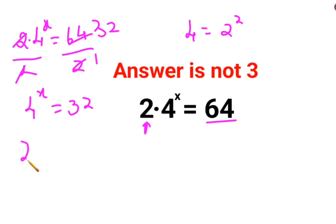So let's write this as 2 square the whole raised to x equals to, and 32 we know is basically 2 raised to 5. So this can be written as 2 raised to 5.